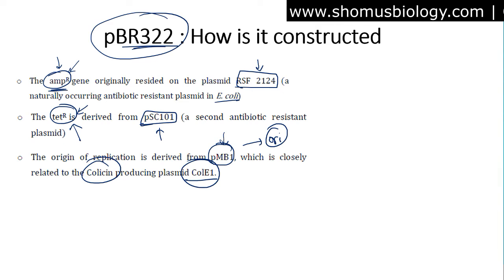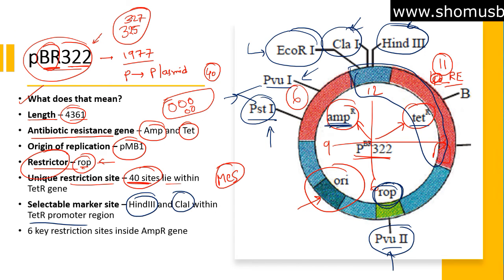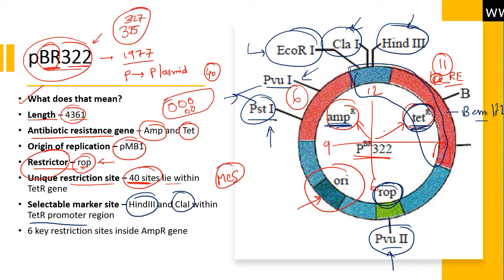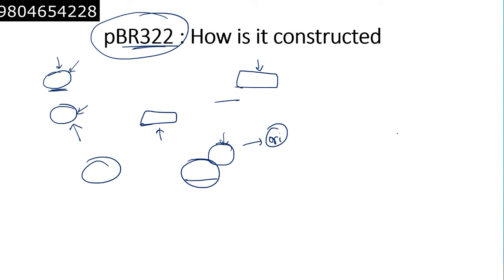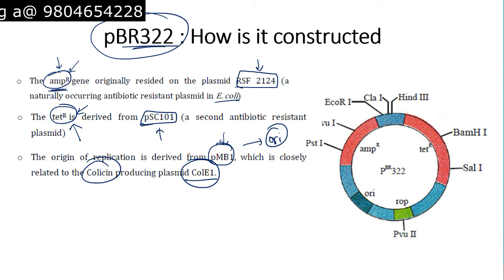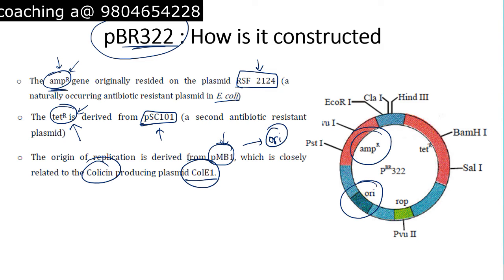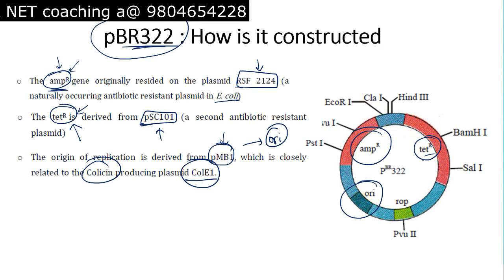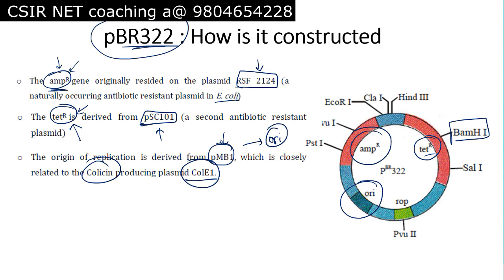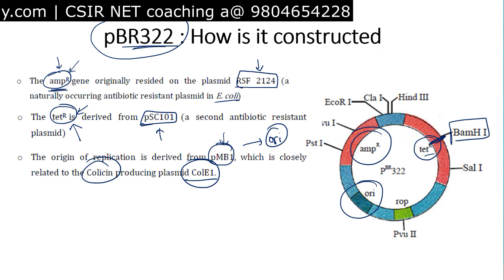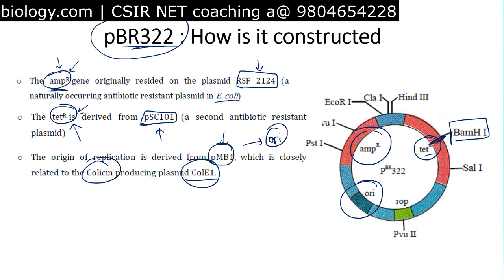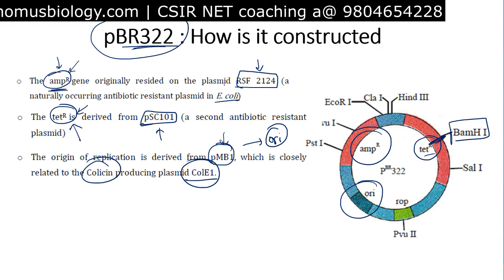In insertional inactivation, if we insert extra DNA at the BamHI site — which lies within the tetracycline resistance gene — it disrupts the tetracycline resistance gene. So the E. coli host carrying this vector will no longer have tetracycline resistance and will be sensitive to tetracycline. This demonstrates how we use insertional inactivation to identify recombinant plasmids.